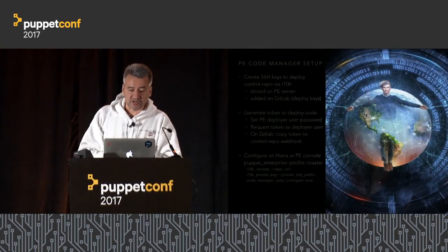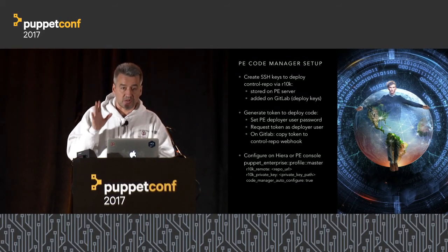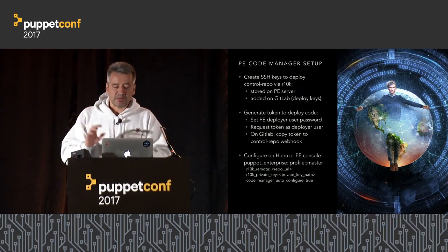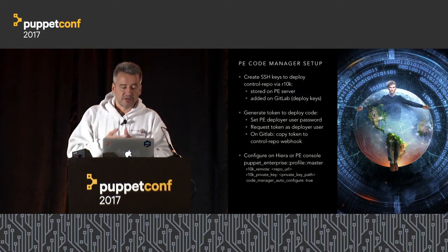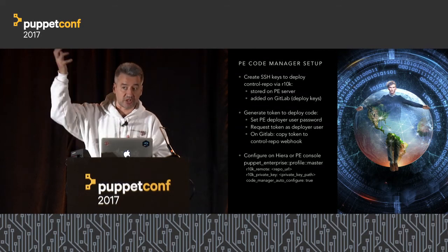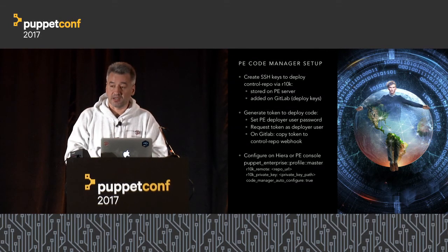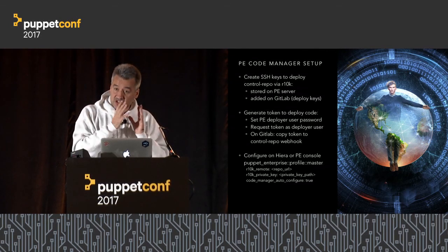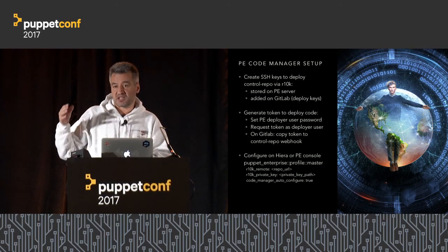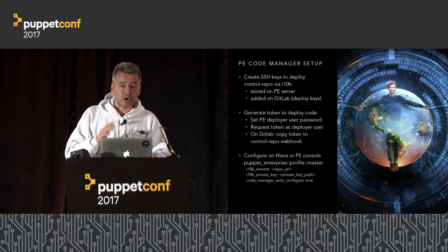If we have our control repo with a main branch of production, whenever a change happens there, it is automatically deployed by Code Manager on our Puppet server in the production environment. The same happens for every other branch. So we can have a feature branch where we want to test some features, and once we commit and push this branch to our GitLab server, the code is automatically deployed as a Puppet environment by Code Manager.